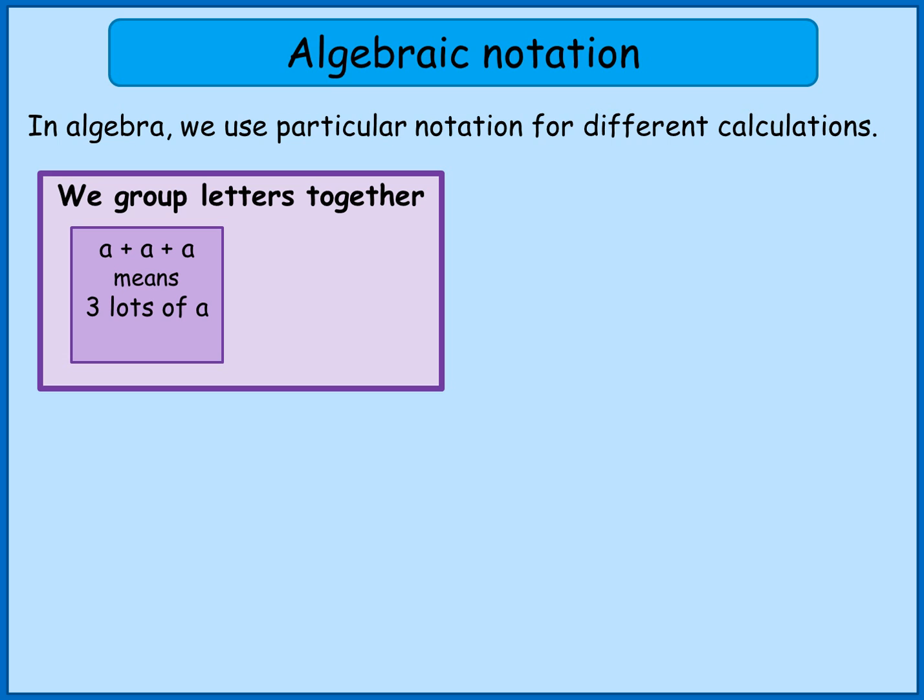You can see I have got one, two, three a's there all together. So that's three lots of a, and lots of means multiply, so instead I could write this as three times a. So a plus a plus a is the same as three times a.